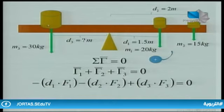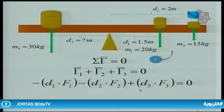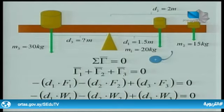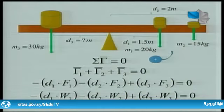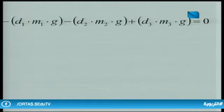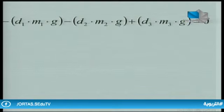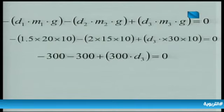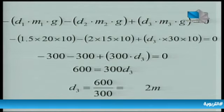أما الثقل الثالث فيحرك الجسم مع الاتجاه الموجب فيأخذ إشارة موجبة. بالتعويض: ناقص D1×W1 ناقص D2×W2 زائد D3×W3 = 0. بتعويض W = M × g وبالحل نجد أن D3 تساوي 2 متر.